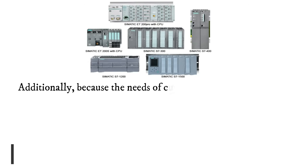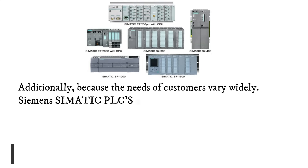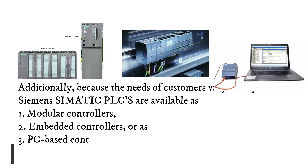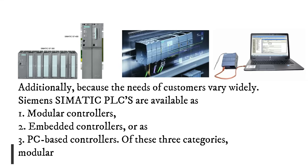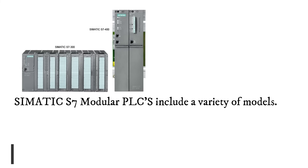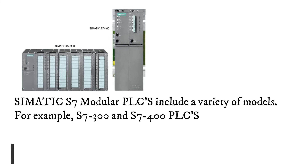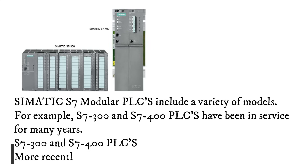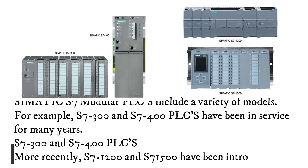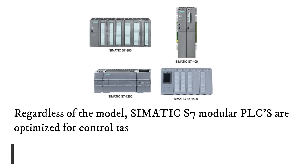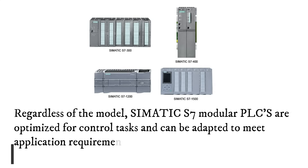Additionally, because the needs of customers vary widely, Siemens offers a range of PLC models. For example, S7-300 and S7-400 PLCs have been in service for many years. More recently, S7-1200 and S7-1500 have been introduced. Regardless of the model, Simatic S7 modular PLCs are optimized for control tasks and can be adapted to meet application requirements by adding modules.